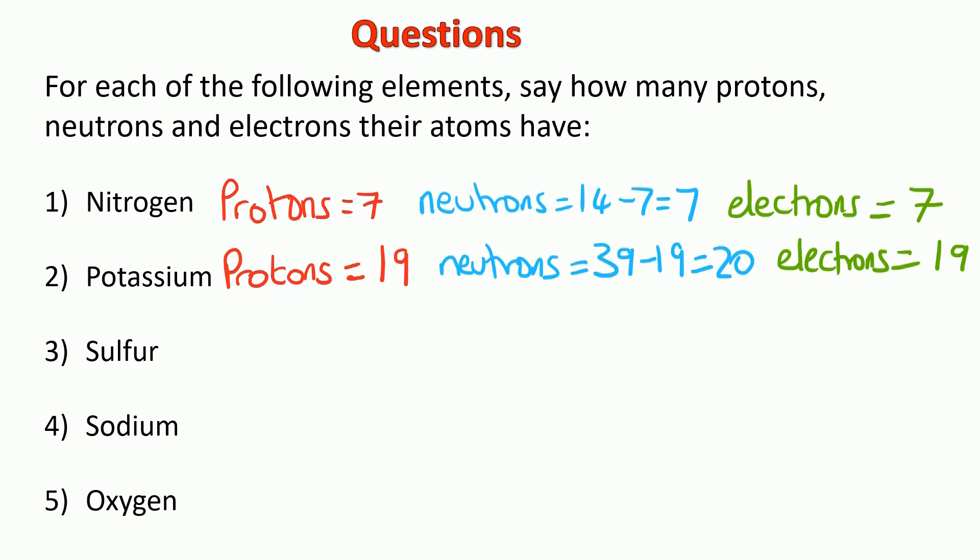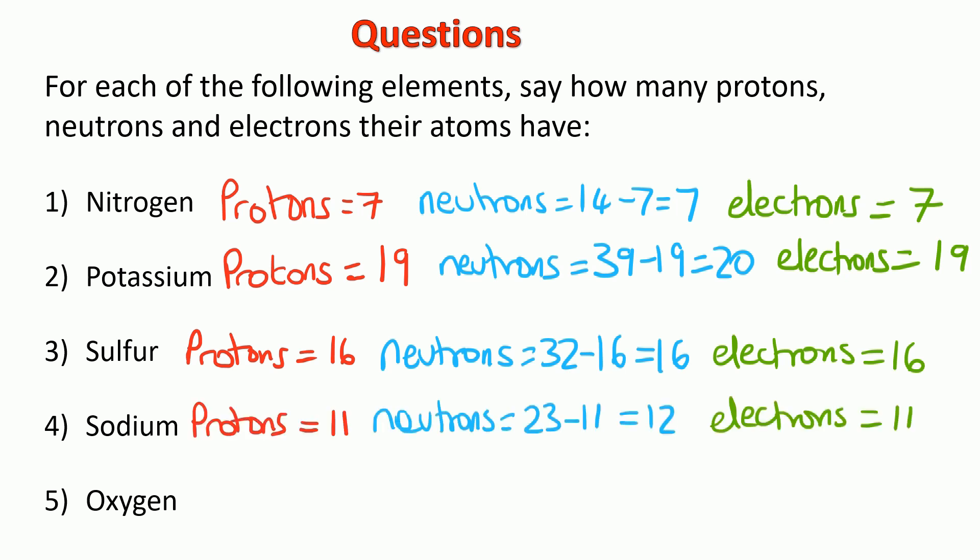Sulfur would be 16 protons, 16 neutrons, and 16 electrons. Sodium would be 11 protons, 12 neutrons, and 11 electrons. And oxygen would be 8 protons, 8 neutrons, and 8 electrons. So well done if you got all of those correct.